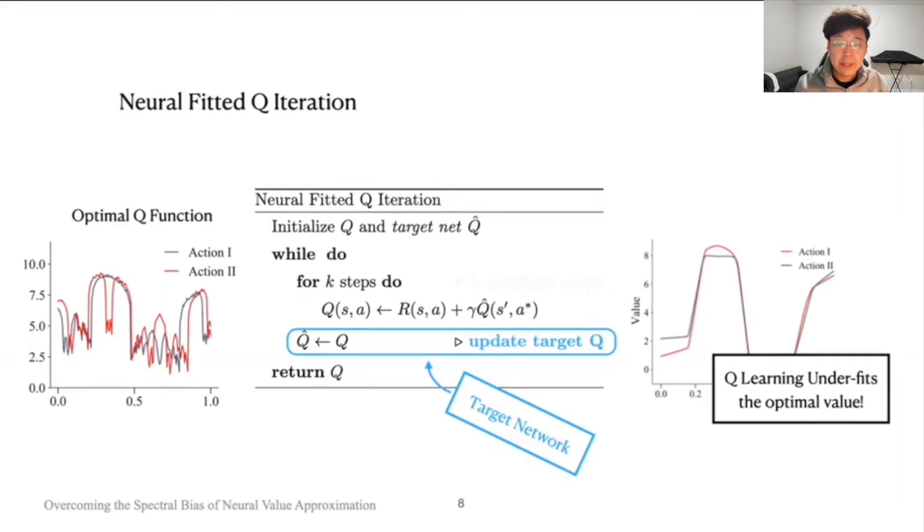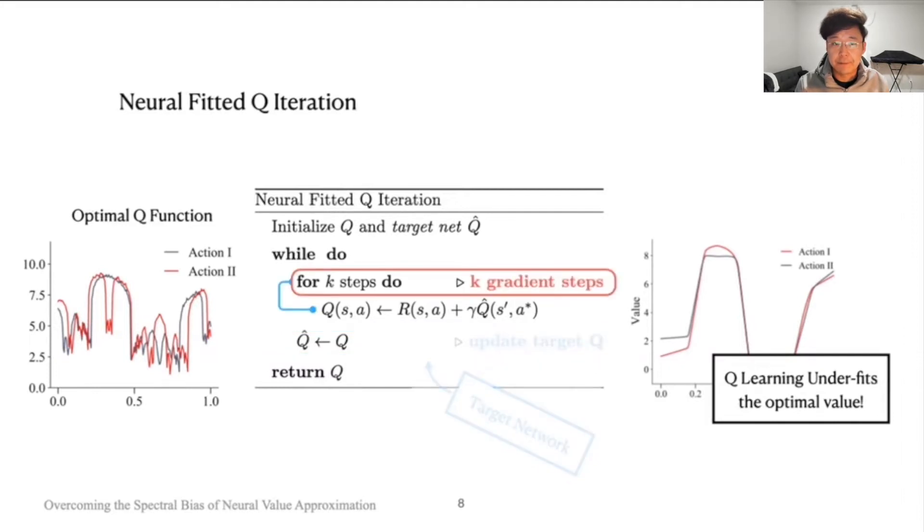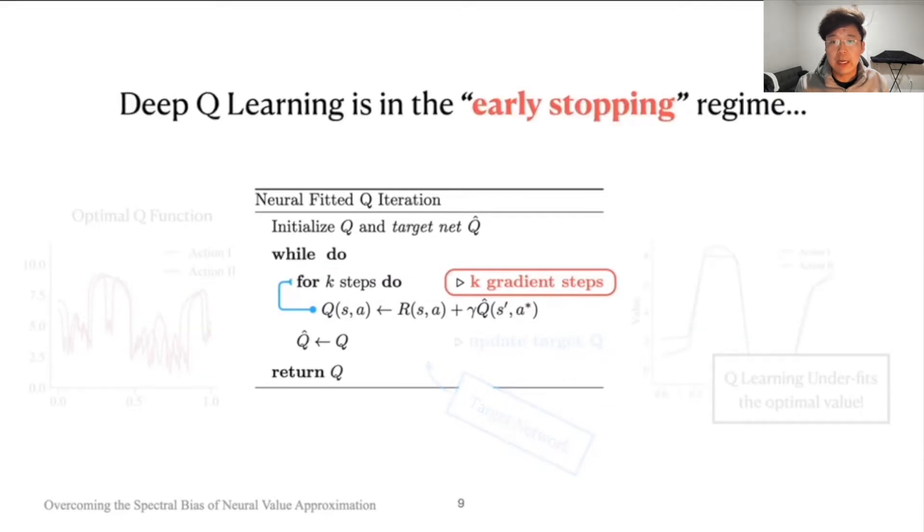And this happens because between the updates of the target network, just a few steps of gradient updates occur. And if we compare this k to the number of gradient updates required to fit the optimal Q function under supervised learning, we quickly realize that we're under the early stopping regime where the network is far from convergence.